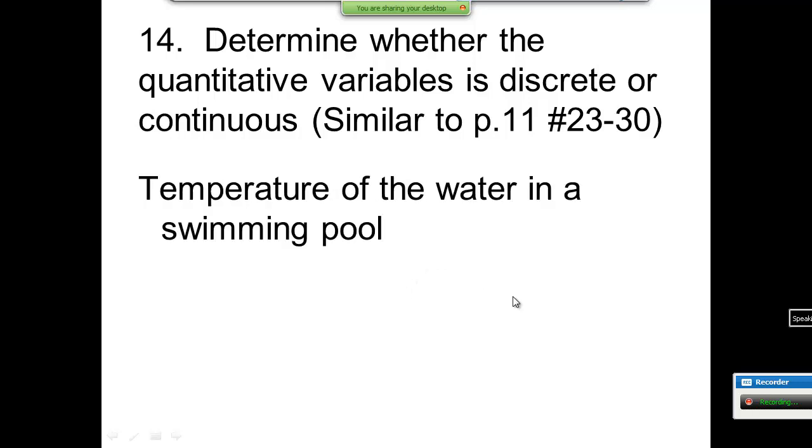If you're doing a study, you'd want to make sure that you specify specifically what type it is. Temperature of the water in a swimming pool: we tend to think of 33 degrees, 34 degrees, 35 degrees. But if you think about it, there's actually some in between. If you had a fine enough measure, it could be 33.5, 33.2. So this has decimals, so this is continuous.